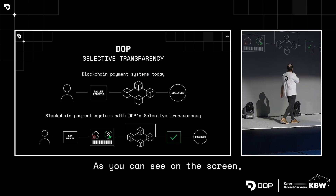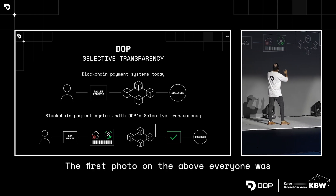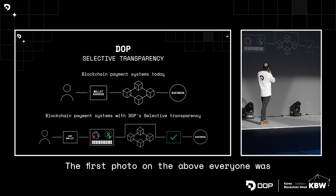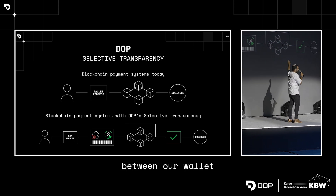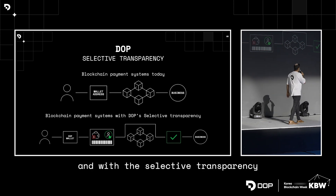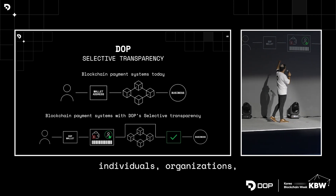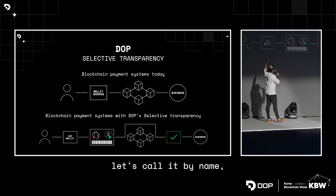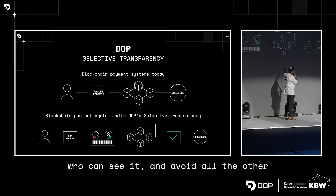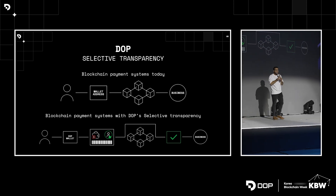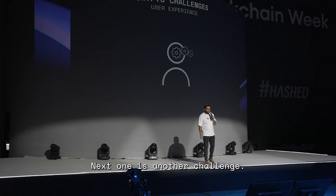As you can see on the screen, we have an example of what we have today on blockchain. In the first photo above, everyone can see the transaction between our wallet address and businesses. With selective transparency, an individual or organization — a wallet address — is doing a transaction and choosing who can see it, avoiding all the other participants in the blockchain ecosystem from seeing it.